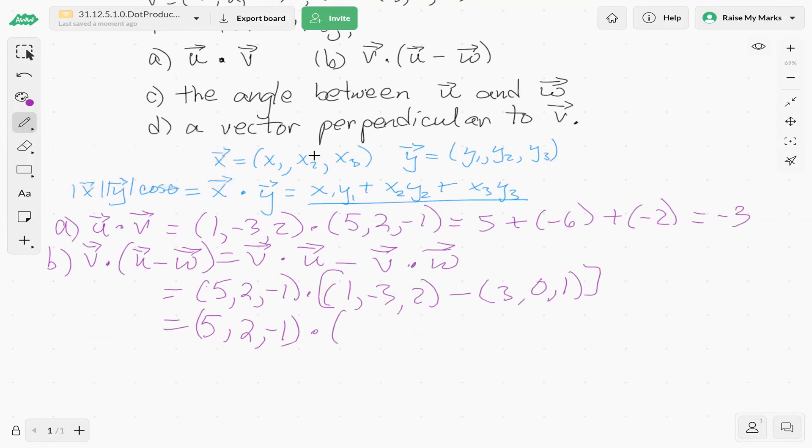Okay, so in brackets, we're going to figure out what this vector is here. So 1 minus 3 is negative 2. Negative 3 minus 0 is negative 3. 2 minus 1 is 1.